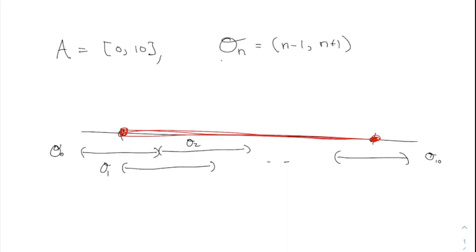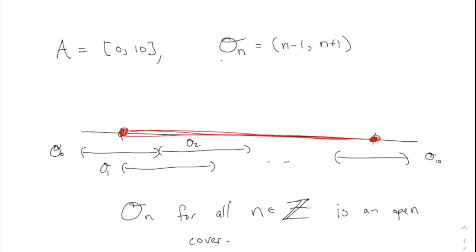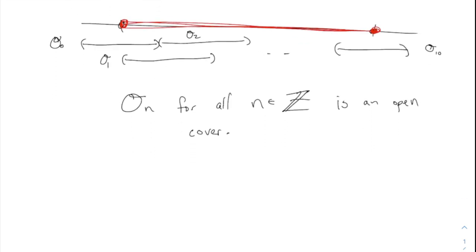In this case, we only need finitely many of them — we only need O-0 through O-10. You could take O-N for all N in the integers, including negative ones. This is an open cover, and this one has what we call a finite subcover. That means even though there are infinitely many sets here, you don't need all of them to cover set A — you only need 11 of them, including the 0 one.